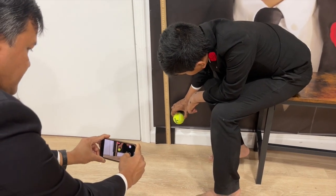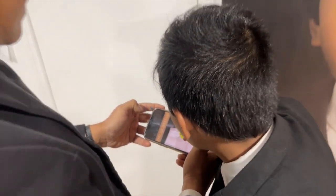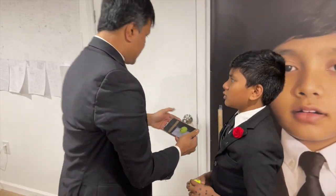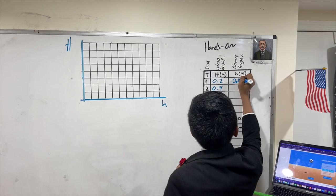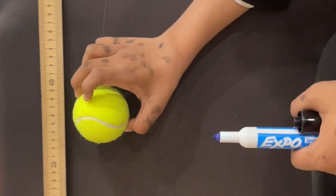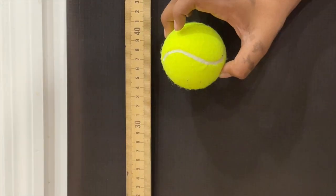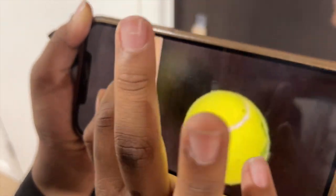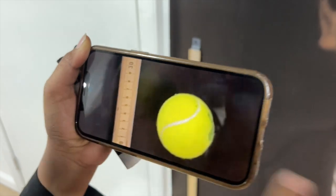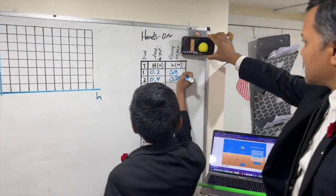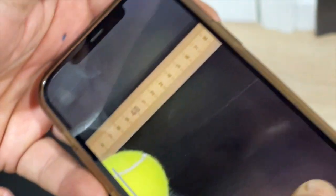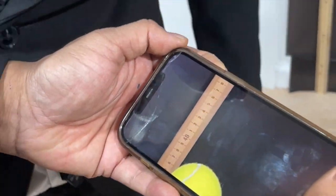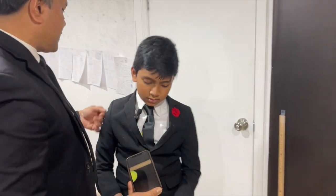Three, two, one. That's about 15 centimeters — we've got 0.15 for this. Three, two, one. Go. It's about 28 centimeters — 0.28. Go. That seems to be about 0.38.